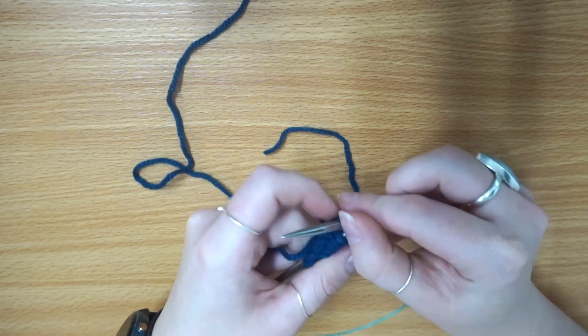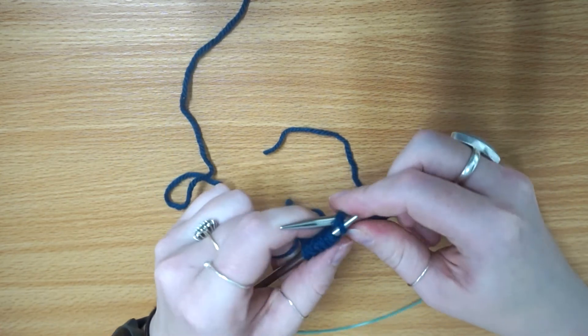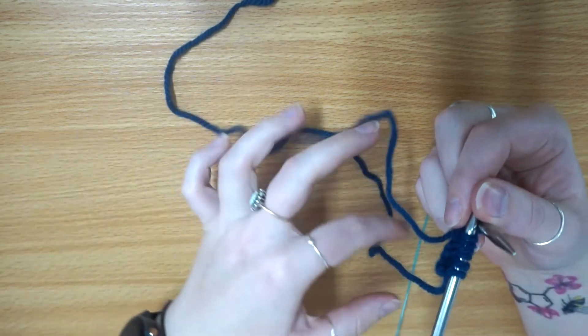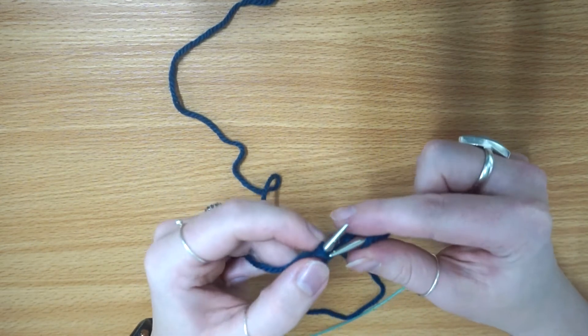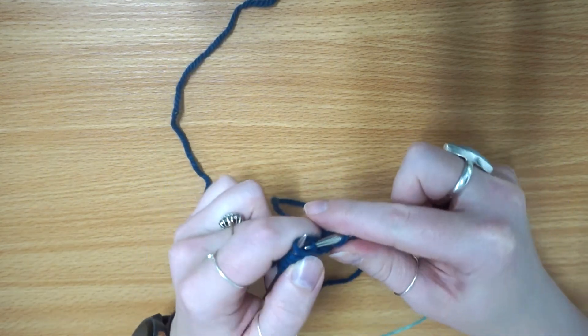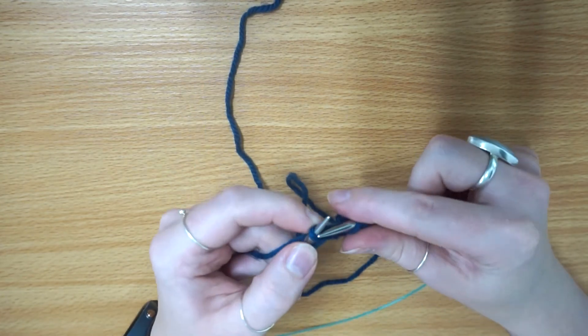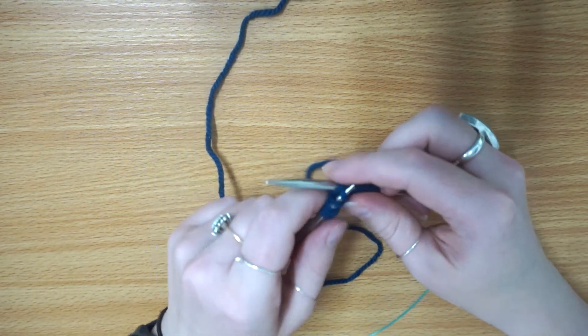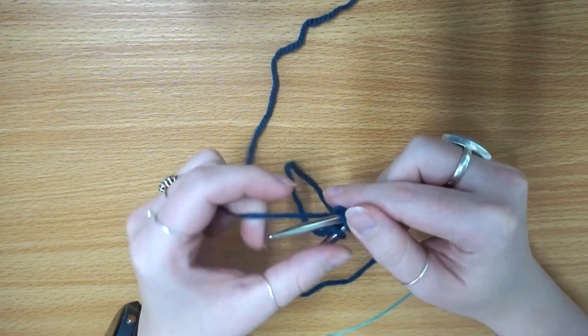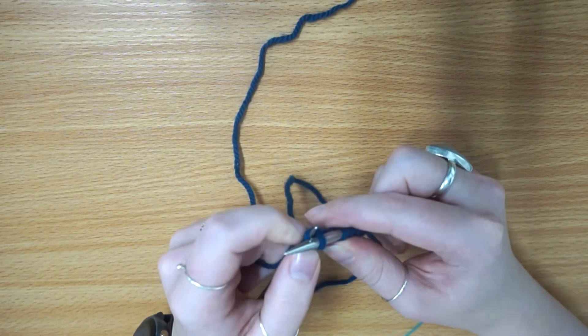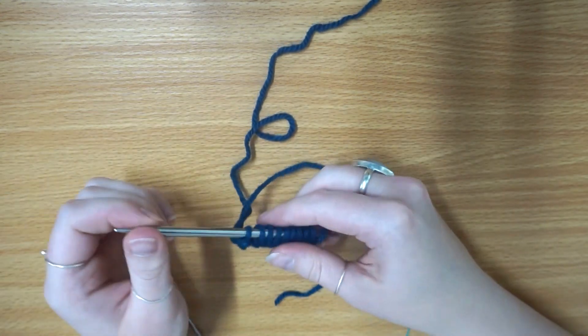One of the benefits of this cast on method is that because you're not working off a tail end like you are with some methods, you don't have to guesstimate how much yarn you're going to need and then get to like the last 12 stitches and realize you don't have enough yarn. Because you're working with the working tail of your yarn, you don't have to worry about trying to figure out how much yarn you're going to need, which was one of the reasons my mum taught me this - I always struggled with knowing how much yarn I would need to cast on.